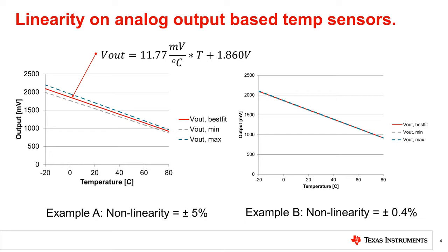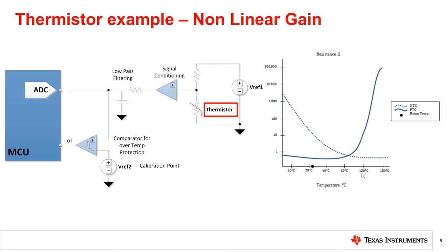The example graphs compare the difference between a plus or minus 5% non-linear output versus a plus or minus 0.4% non-linear output from an analog temp sensor data sheet. Now let's discuss a non-linear temperature sensor.